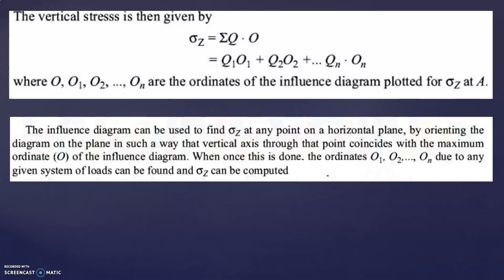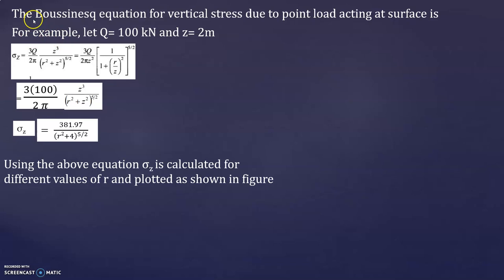The influence diagram can be used to find sigma z at any point on a horizontal plane by orienting the diagram so that the vertical axis through that point coincides with the maximum ordinate of the influence diagram. Now let us take one example using Boussinesq's equation for vertical stress due to a point load acting at the surface.